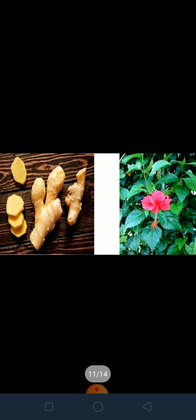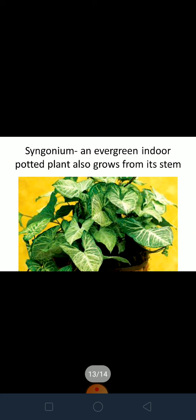Potato, ginger, and hibiscus are common plants we all know about. Money plant is a beautiful indoor plant in our households — I hope all of you have seen it. Syngonium is another evergreen indoor plant — you just clip it and transplant it, and it will grow into a new plant. All these plants are growing from a body part of their parent or mother plant. When plants produce more plants this way, it is called vegetative reproduction.